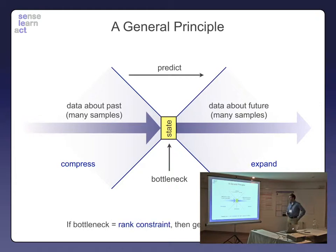One way to solve this problem is we can create a covariance matrix of past and future observations. And if we think of the bottleneck as a rank constraint on this covariance matrix, then we get a spectral learning algorithm.